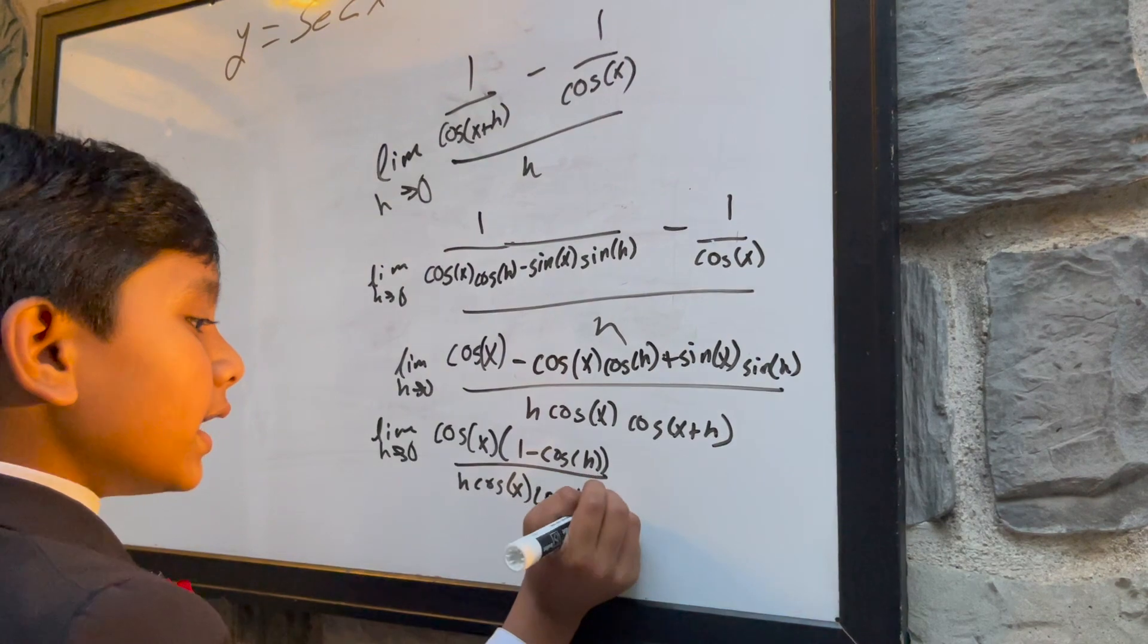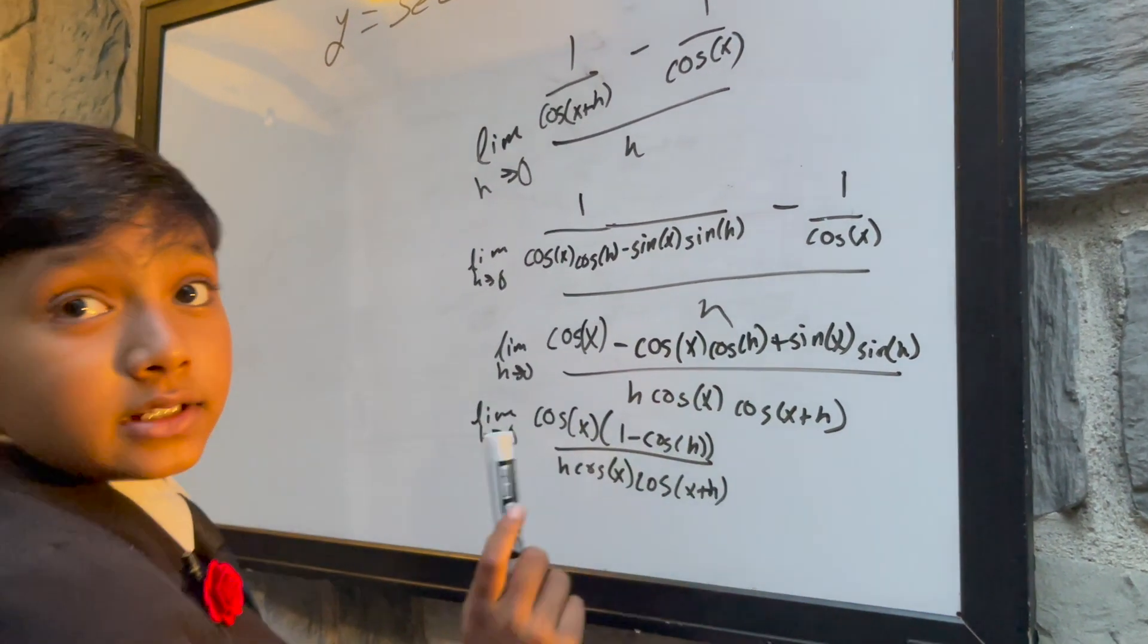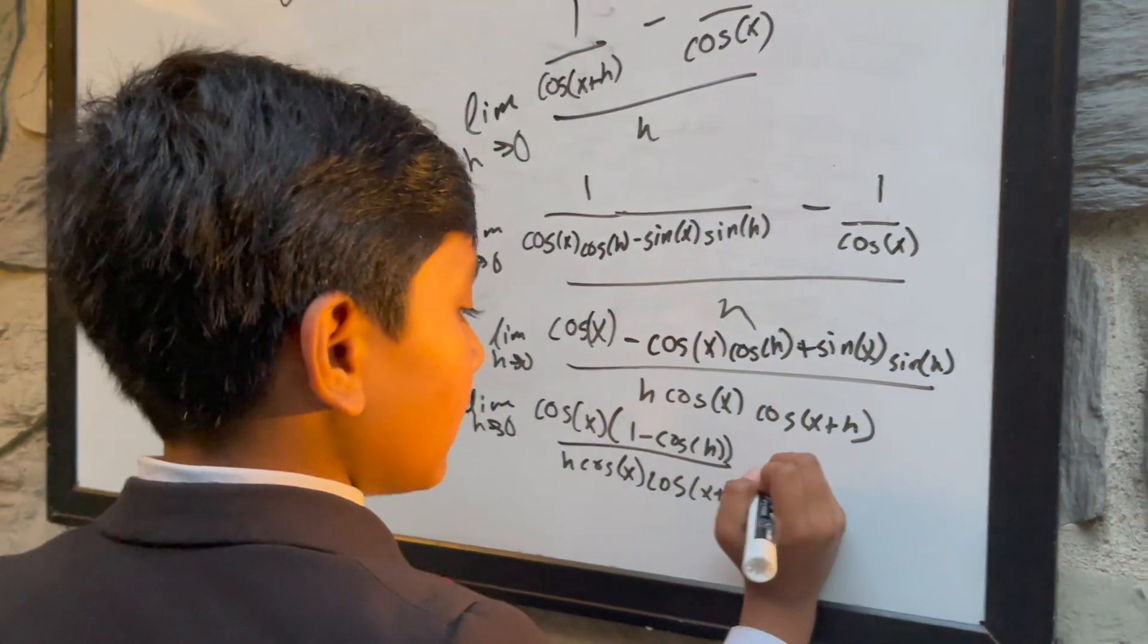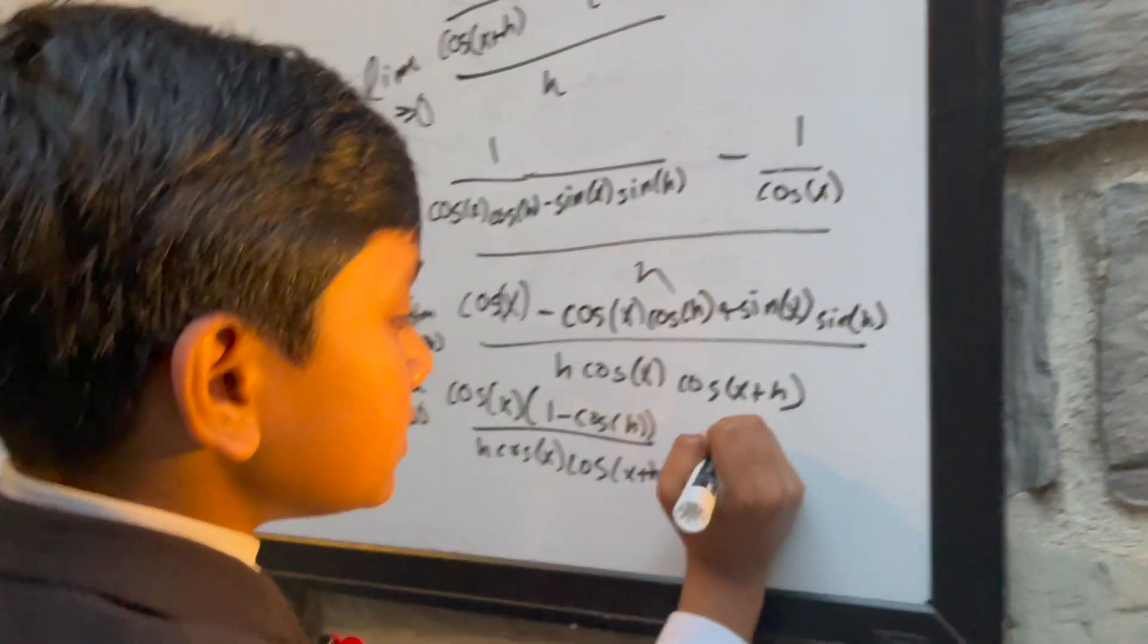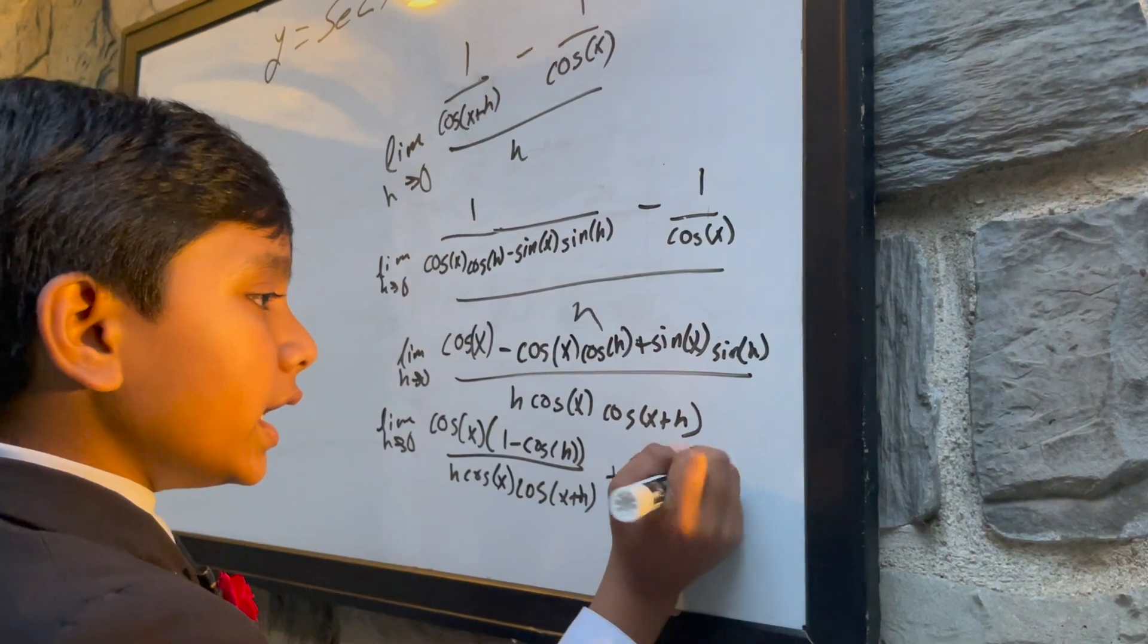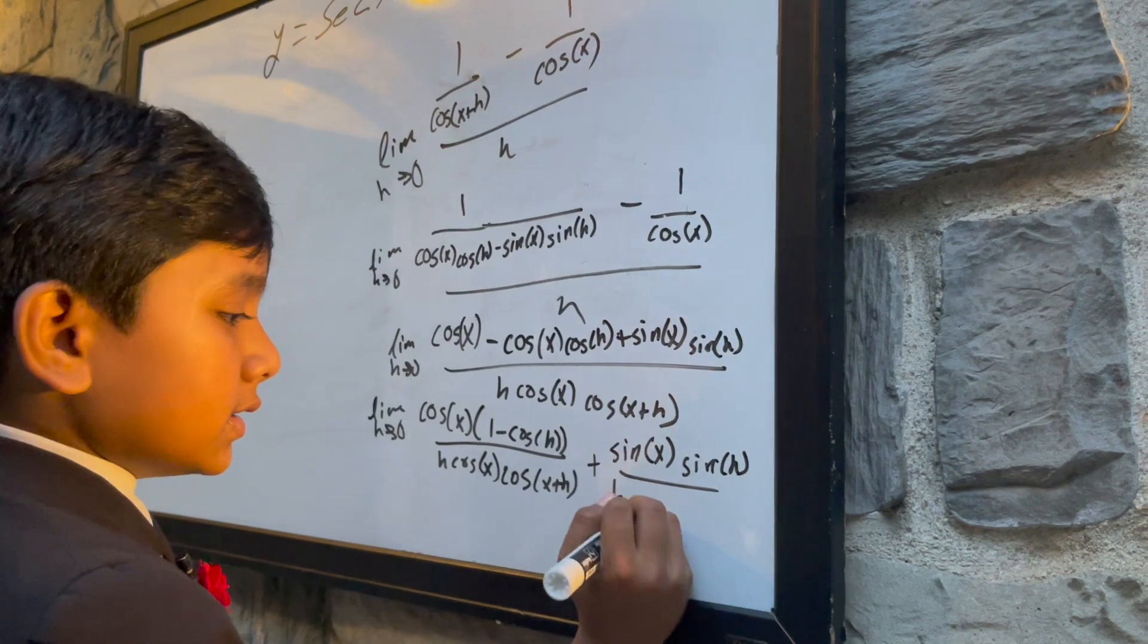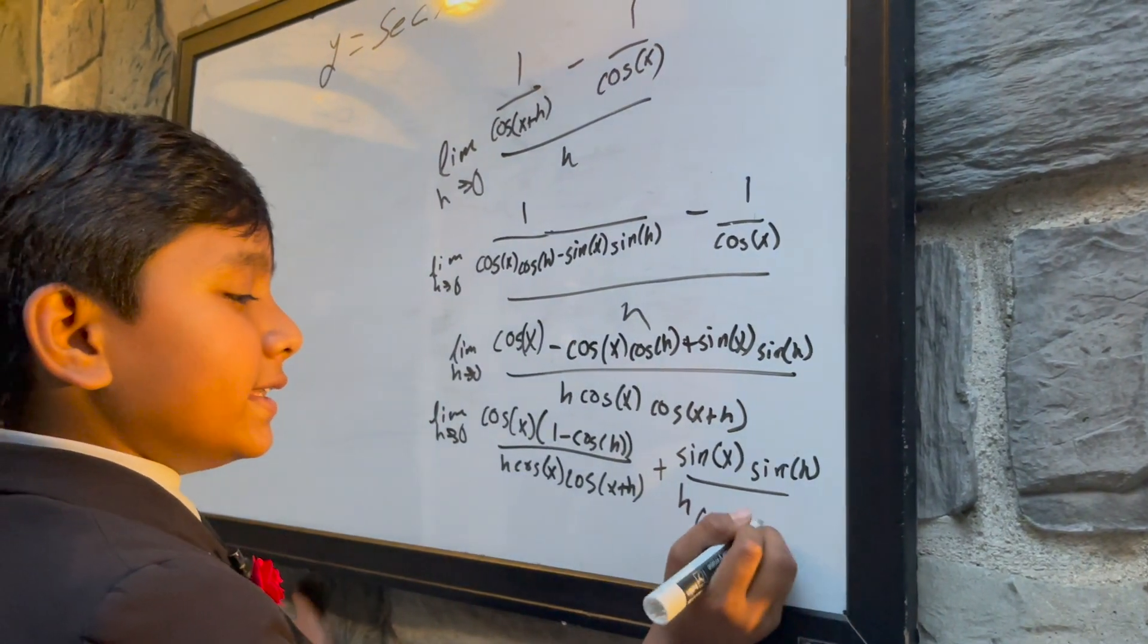Well, at least it's not this mouthful multiplied by cosine x multiplied by h, right? Am I right? So, plus sine of x sine of h over the same thing because I'm too lazy to say it again.